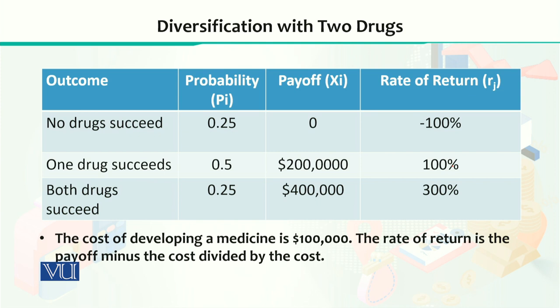If you had invested in two medicines — two drugs — instead of just one, you can see that if both your products fail, the chances are very low: the probability is just 25%. If one product is successful and one fails, there is a 50% chance. And if both products are successful, there is a 25% chance.